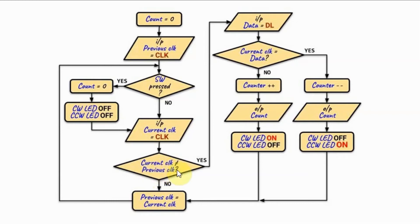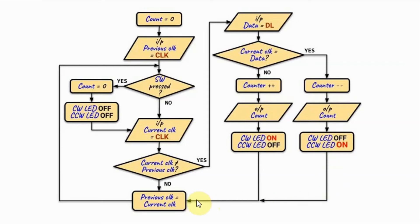If the current clock does not equal the previous clock, the clock has changed state and the encoder has been rotated. We then determine the direction by inputting the data line bit. If the current clock equals the data value, the rotation is counter-clockwise, so we decrement the counter, output the count value, and turn on the counter-clockwise LED while turning off the clockwise LED. If the current clock does not equal the data value, the rotation is clockwise, so we increment the counter, output the count value, and turn on the clockwise LED. We then assign current clock to previous clock and continue the process.